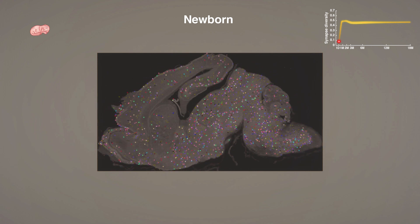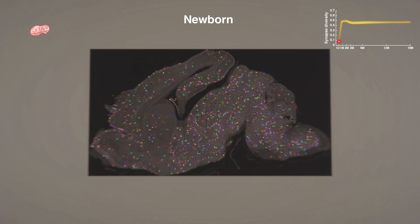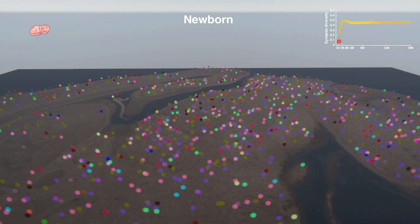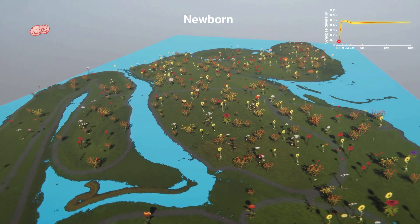Here we see a cross-section of a newborn mouse brain. Now we see the synapses — there are relatively few, and the graph in the top right corner shows there is low diversity.